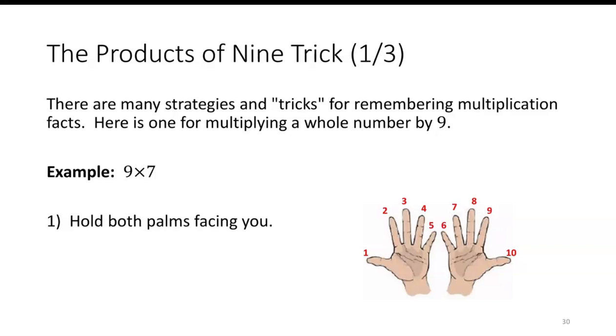So your left hand is the numbers 1 through 5, starting with your thumb. And then with your pinky on the right hand, 6, 7, 8, 9, and 10 would be the right thumb.